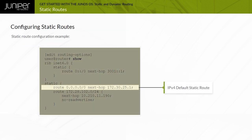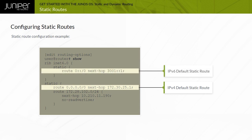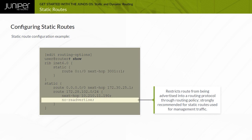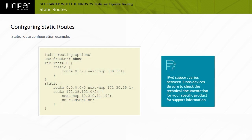The basic configuration syntax for IPv4 and IPv6 static routes is displayed. The No Re-Advertise option prohibits the redistribution of the associated route through the routing policy into a dynamic routing protocol such as OSPF. It is recommended that you use the No Re-Advertise option on static routes that direct traffic out of the management Ethernet interface. Note that IPv6 support varies between Junos devices.